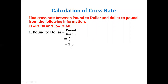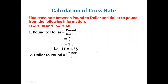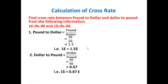When we simplify, the answer is 1.5. That means one Pound equals to 1.5 Dollar. This is the exchange rate between Pound and Dollar. Then, we are going to find the Dollar to Pound exchange rate: Dollar divided by Pound — that is 60 divided by 90. The answer is 0.67. The exchange rate between Dollar to Pound is 1 Dollar equals to 0.67 Pound. Like this, we calculate the Cross Rate.